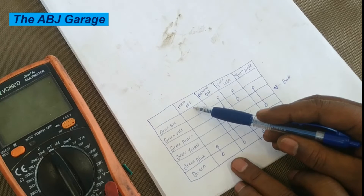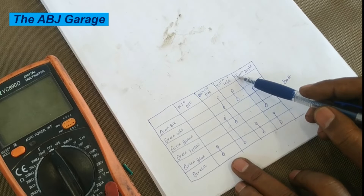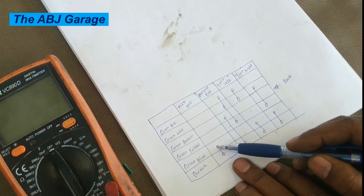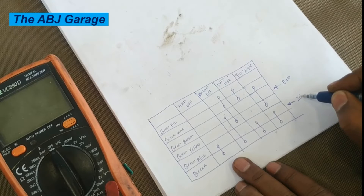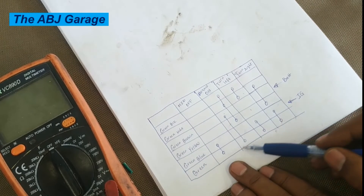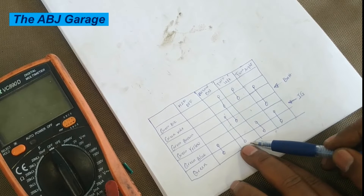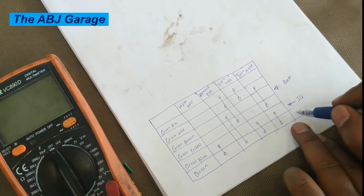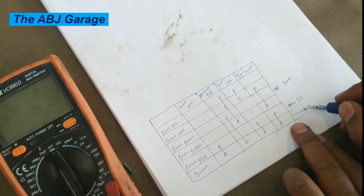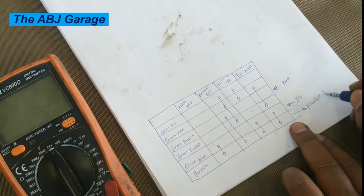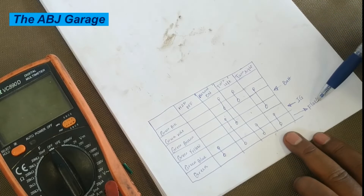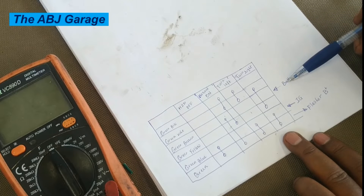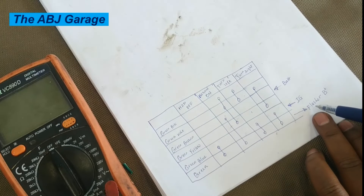Finally, we have a green line that gives power to the flasher circuit. This line goes to the flasher B+ terminal. Now we have identified three of the wires, and we are left with identifying the remaining wires. There is a line that goes to the flasher.